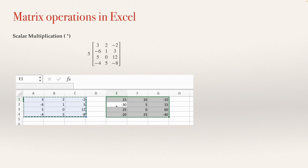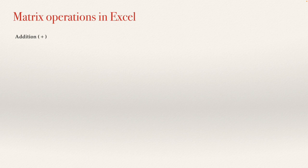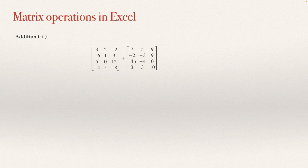The second operation will be addition. You need to have two matrices — for example, this matrix and this matrix. The two matrices need to be of the same size. If they are not the same size, you will receive an error message. In Excel, both matrices need to be written first.